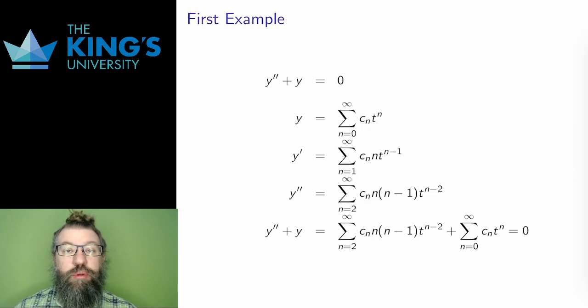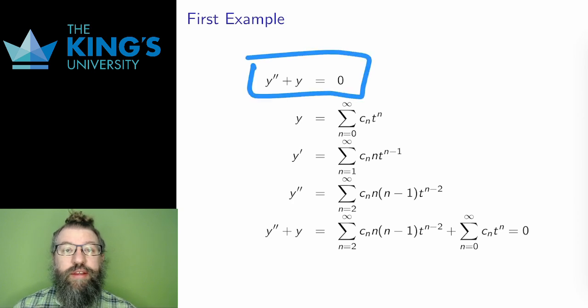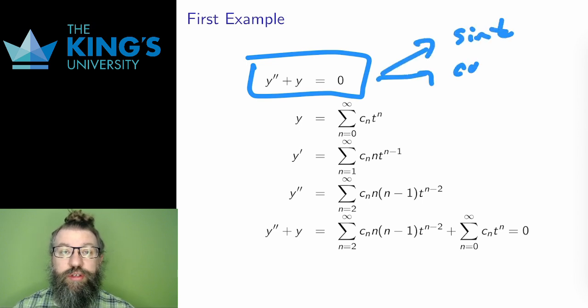This video goes through examples of series solutions at ordinary points. I'll start with a pretty simple equation, y double prime plus y equals 0. We've already seen this equation a couple of times, its solutions are sine and cosine. But let me show you how the series method works here, how it constructs the series for sine and cosine out of the DE.